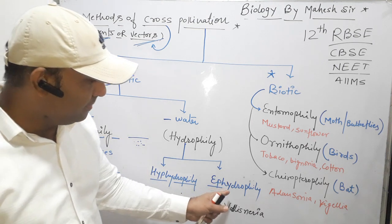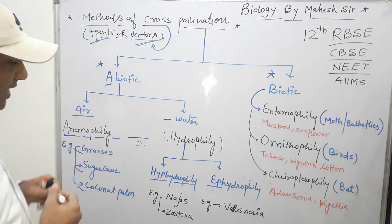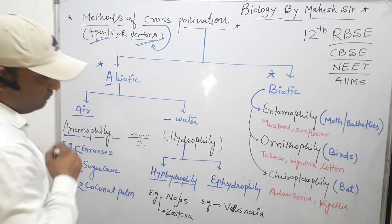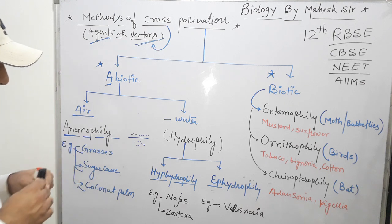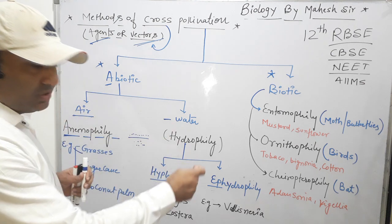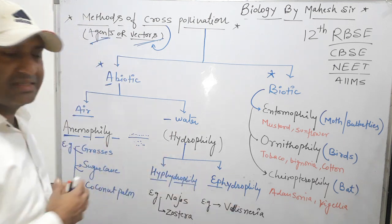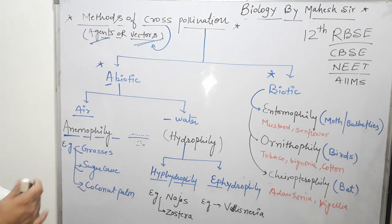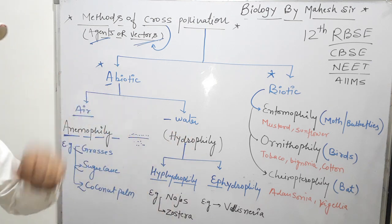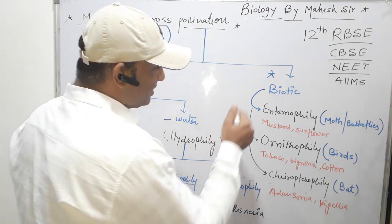The second type is epi-hydrophily, which occurs above the surface of water. When pollen grains are present just above the water surface and then move with the upper water current and travel to the stigma, that is called epi-hydrophily. An example is Vallisneria. So there are two types of hydrophily.